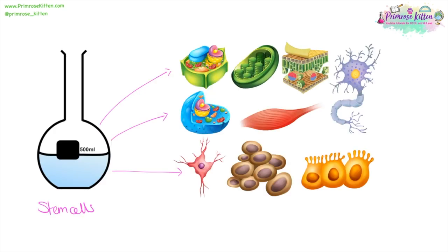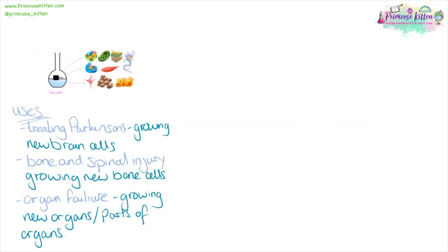Stem cells are fantastic things because they have the potential to turn into any other type of cell. They have a number of different uses. For example, if you're treating Parkinson's disease, they can be used to grow new brain cells. If we're talking about brain or spinal injury or bone injuries, then they can be used to grow new bones to fill the gap. If we have organ failure, we can grow new organs or parts of organs instead of making someone wait on the incredibly long transplant waiting list.